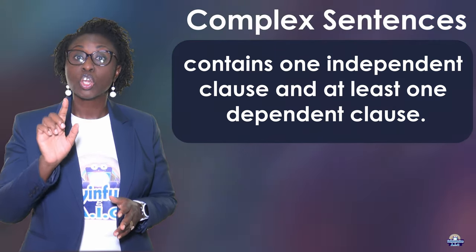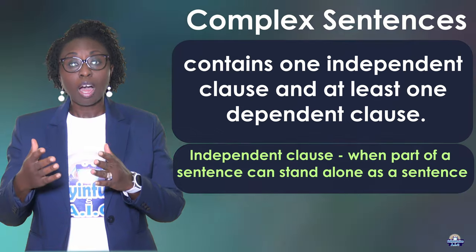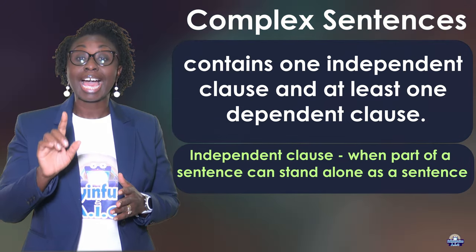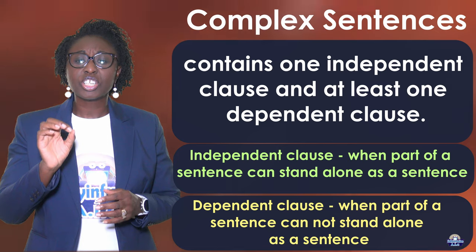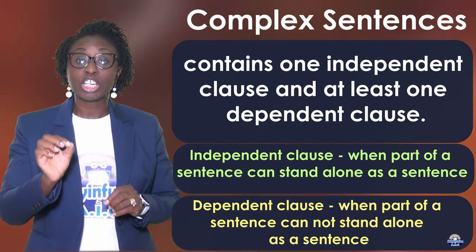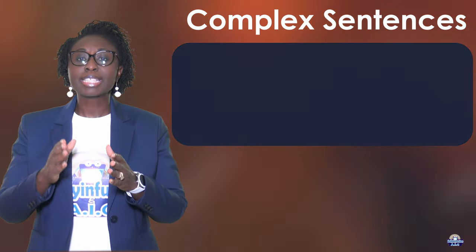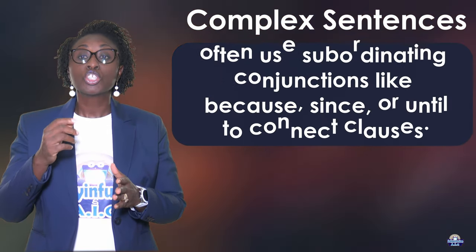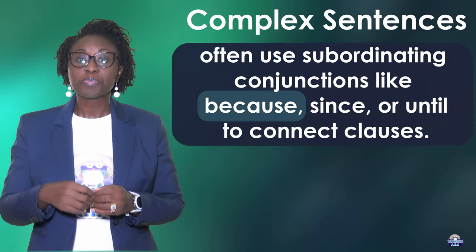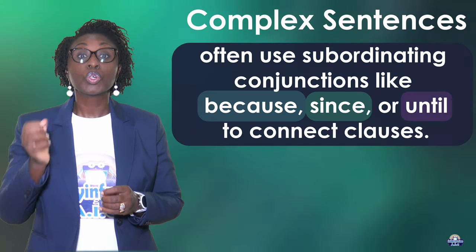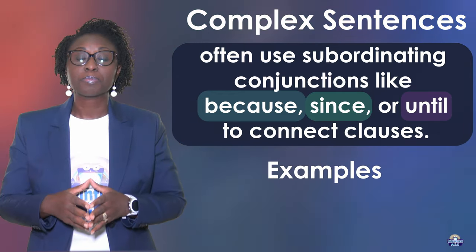A complex sentence contains one independent clause and at least one dependent clause. An independent clause is a part of a sentence that can stand alone as a sentence. A dependent clause is a part of a sentence that cannot stand alone as a sentence. Complex sentences often use subordinating conjunctions like because, since, or until to connect clauses.